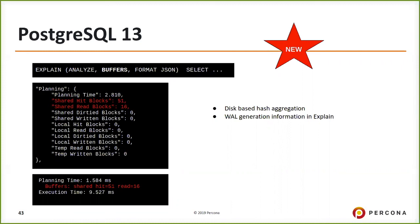Postgres 13 has more optimizations in terms of planning and execution. There are hash aggregation related patches, and WAL generation information in the explain plan. These things are new, but until released there's no commitment. And there's a format option — JSON format will have detailed information, while the normal text format will have a single line with the least information.